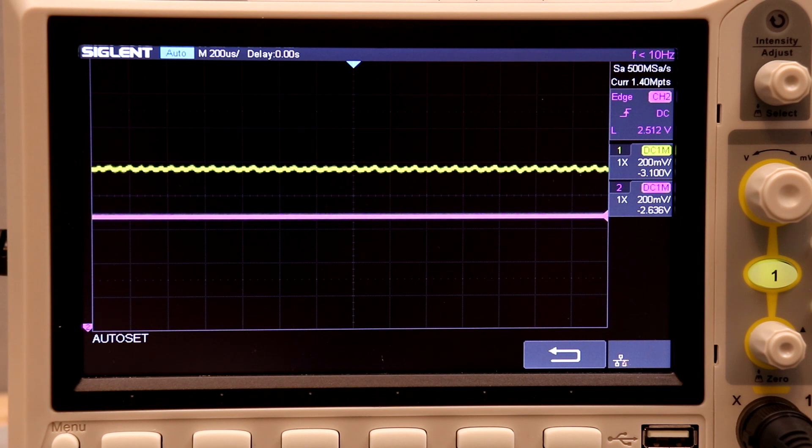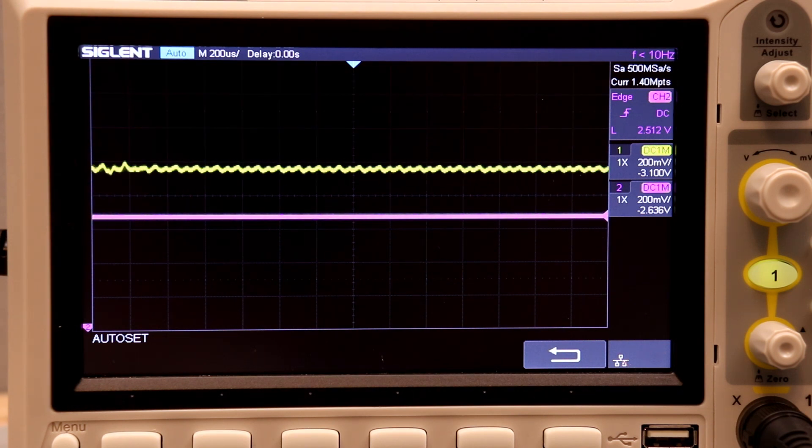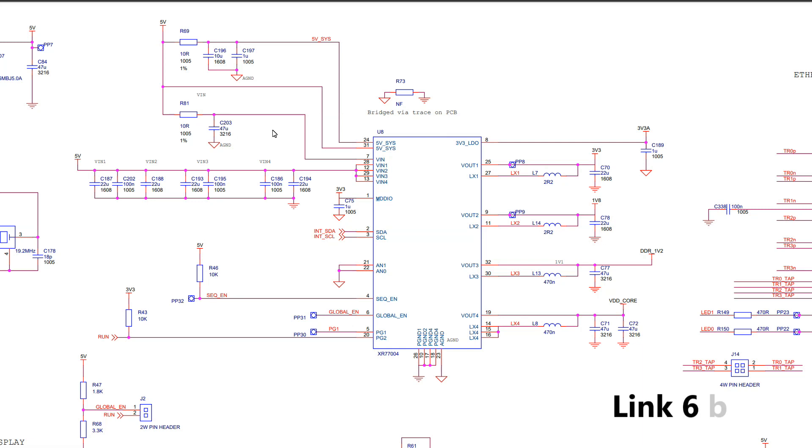To fix this, the PWM signal has to be isolated from that noisy 3.3 volts and powered using something cleaner. And that's exactly what they did with the Raspberry Pi 3 using a different power chip, which has a separate 3.3 volt clean power output. And they pass the PWM through a buffer that's attached to that clean output.